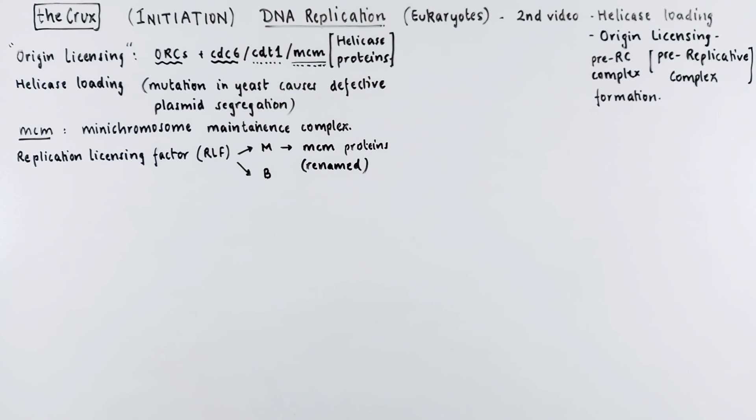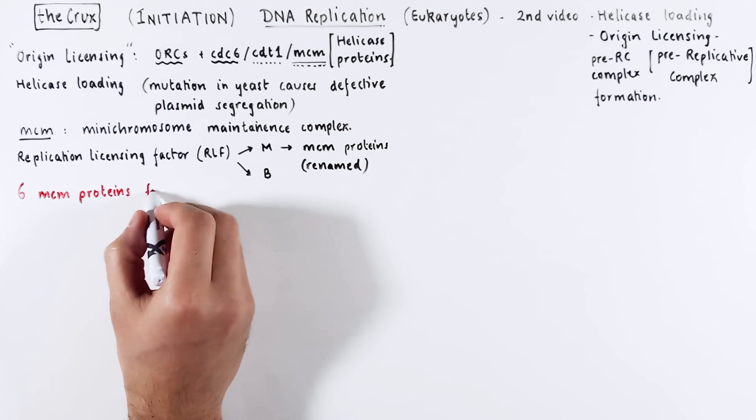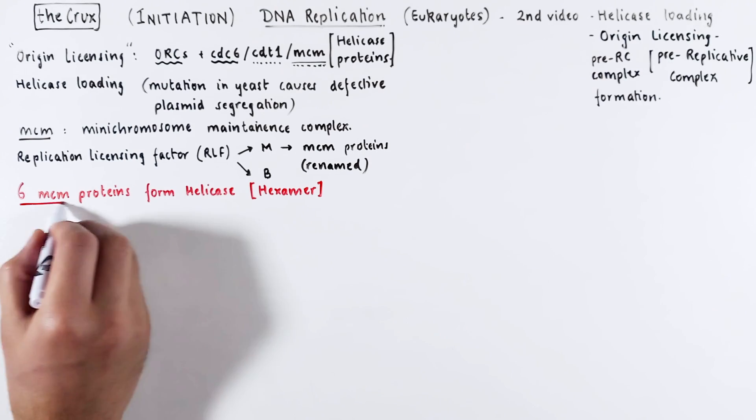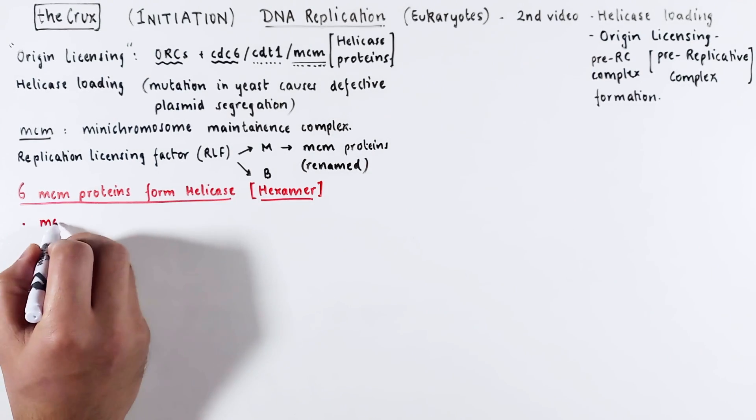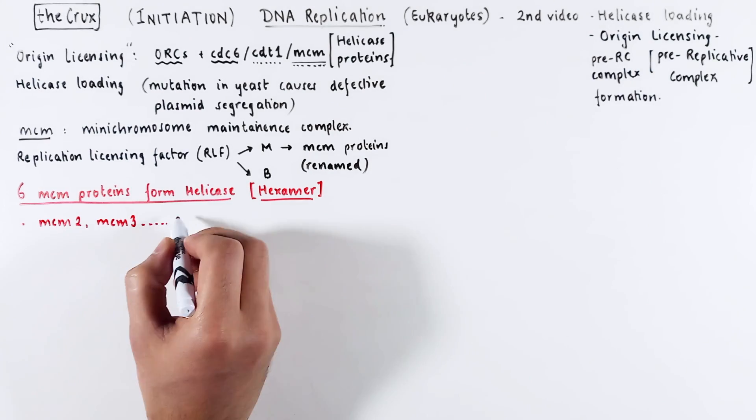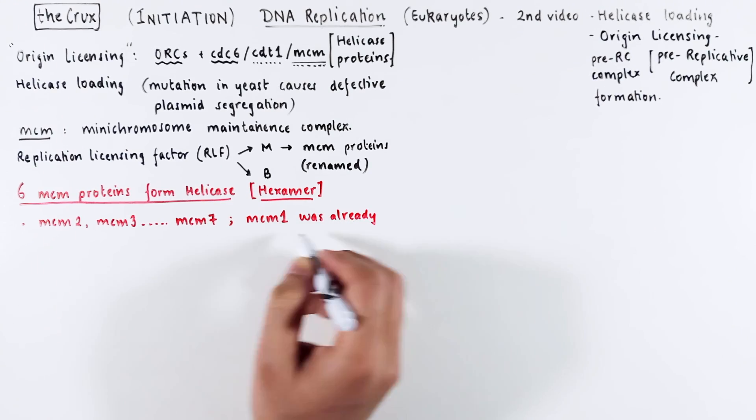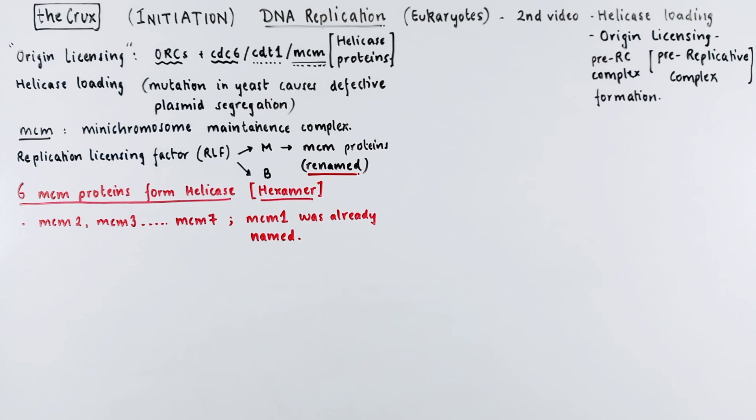So if you read old papers, you may not find much if you use MCM in your keyword search. So there are six MCM proteins in total that form the helicase and that gives us a helicase hexamer. The proteins are named in numbers starting from MCM2, MCM3 all the way until MCM7. MCM1 does not exist as a name of the helicase protein because MCM1 was already named before RLFs were renamed.